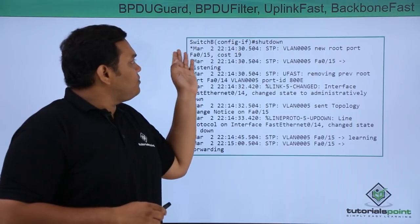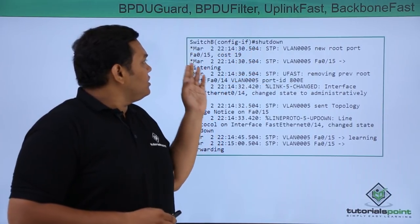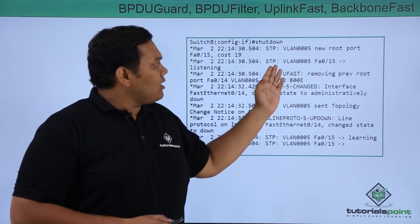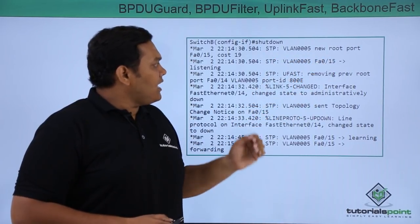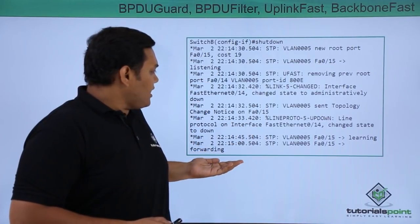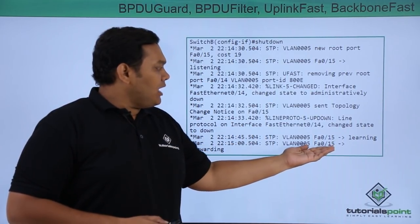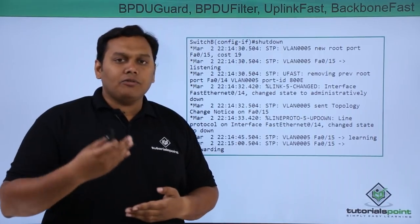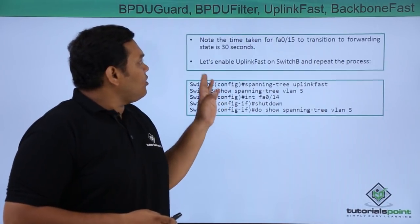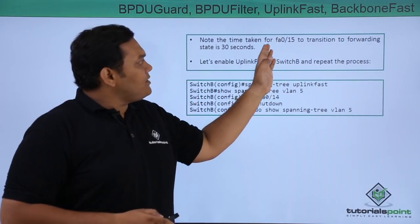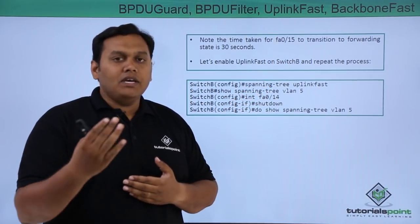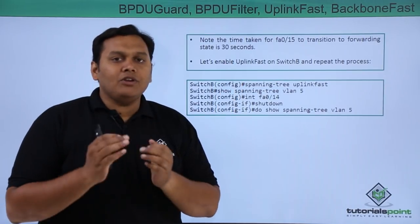When you enter shutdown on switch B, you can see details about the VLAN, new port, fast ethernet interface, and removal of the previous root. Forwarding from FA0/15 is shown, along with learning from FA0/15, and the FA0/15 transition to forwarding time is noted as 30 seconds.